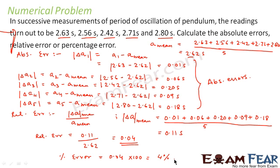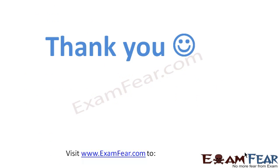So we derived all the values for absolute error, relative error, and percentage error. I hope it is clear to you now what the three kinds of errors are which we normally need to calculate and how we put them into formulae. Thank you.